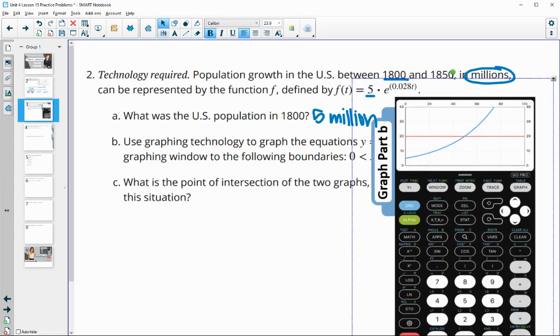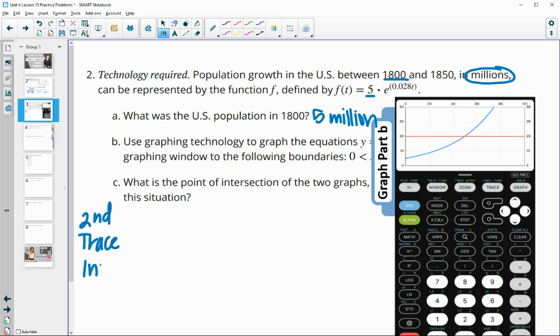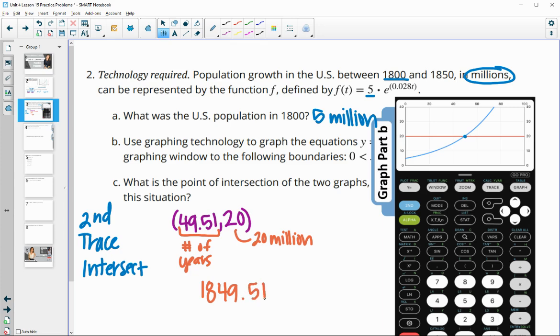And so if you're using the TI-84, then you would hit second, and then you would hit trace, and then you would select intersect, and that will help you get there. If you're using like desmos.com or something like that, you can just click on the intersection, and it'll tell you the point. And so the intersection point for this one was the point 49.51 comma 20. And so what does this tell us? So this tells us when the population is 20 million. So this represents the U.S. population of 20 million. And this is the number of years since 1800. So this is actually going to be 1849.51. So halfway through the year 1849 is when the U.S. population hit 20 million.